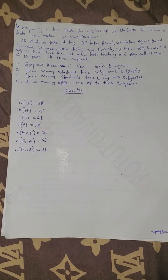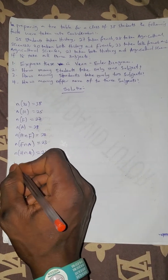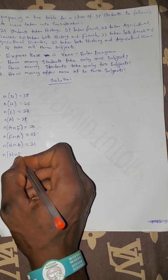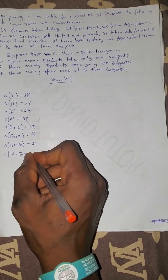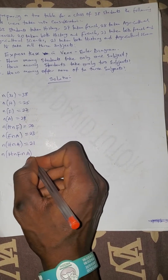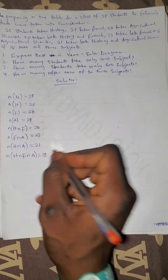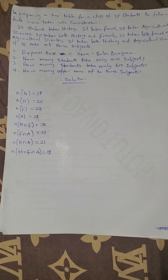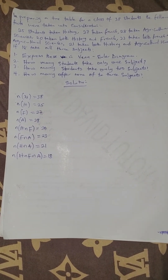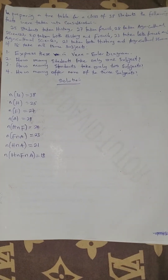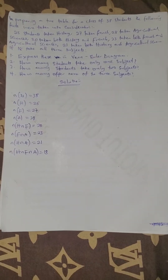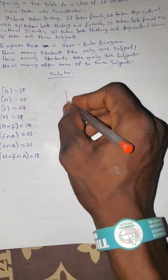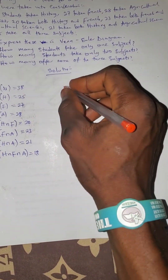18 students take all three subjects — History, French, and Greek — so History intersection French intersection Greek is 18. The first question asks us to express this information in a Venn diagram.